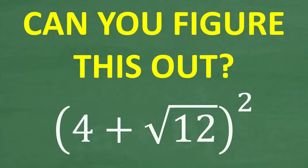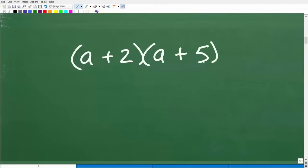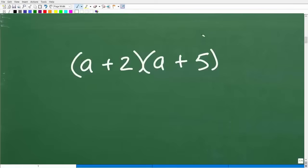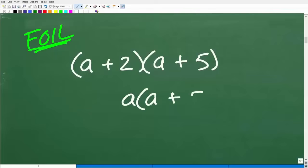Let's quickly review some basic algebra and see how well you know how to multiply binomials. What if we had a plus two times a plus five? Here is a binomial times a binomial. There are a couple of different ways you can approach this problem, but the most famous way is to use something called the FOIL method. Most students, when they learn how to multiply binomials, think of the FOIL method. But before we get into binomial times binomial, what if we had a monomial? A monomial is just a single term multiplying a binomial, something like this.